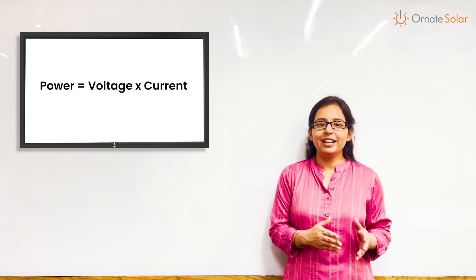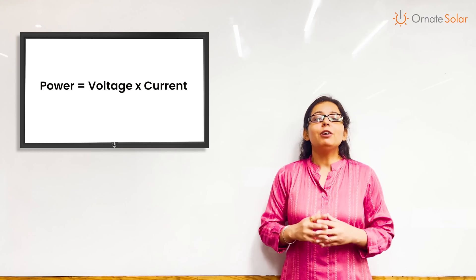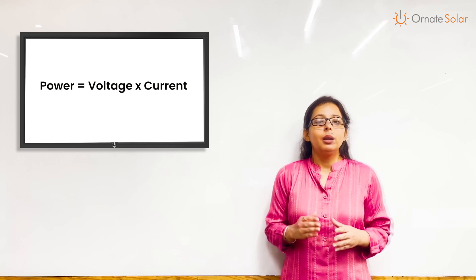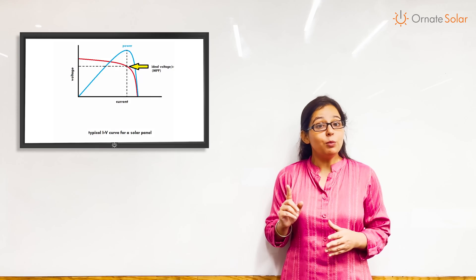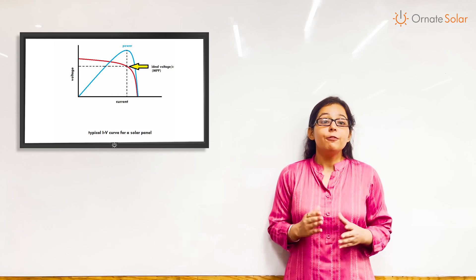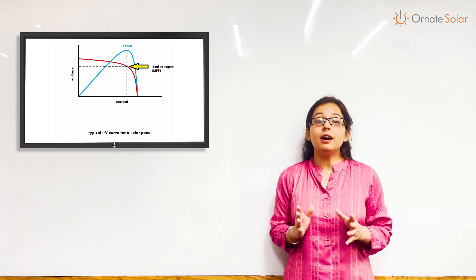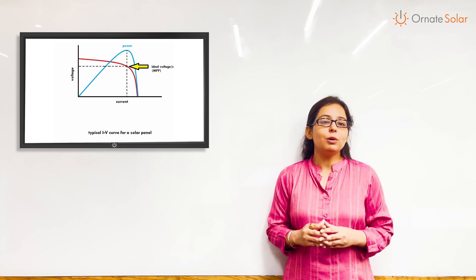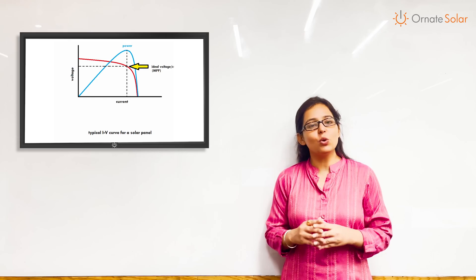Now remember what we learnt in school — power is equal to voltage multiplied by current. So at different voltage and current levels, the power produced by the panel would be different. But there will be one point, at one current and voltage level, where the power produced will be the highest. This is called the maximum power point, or MPP, of a solar panel.